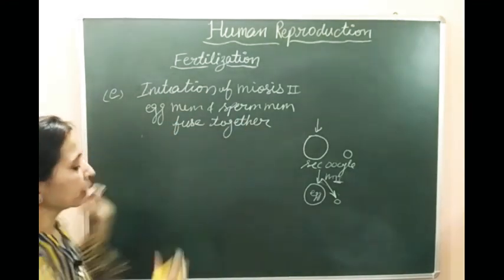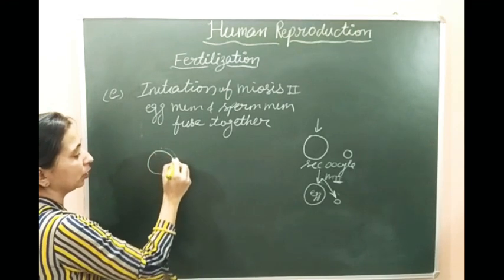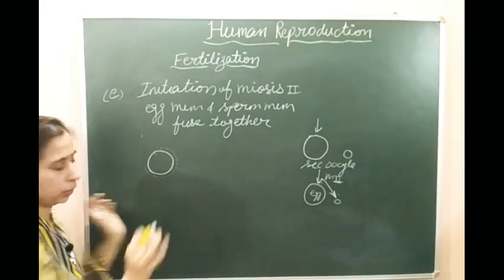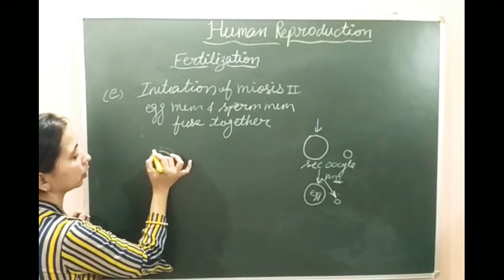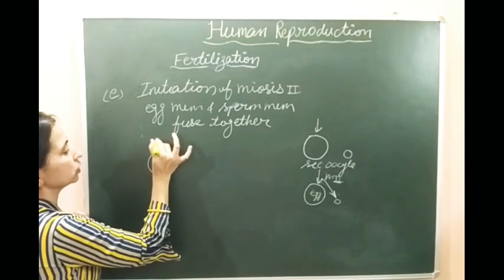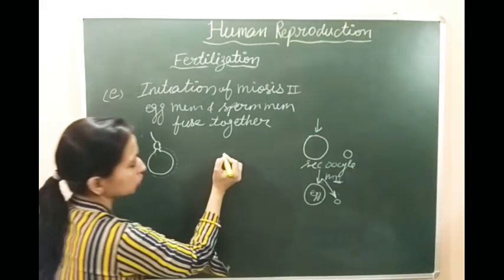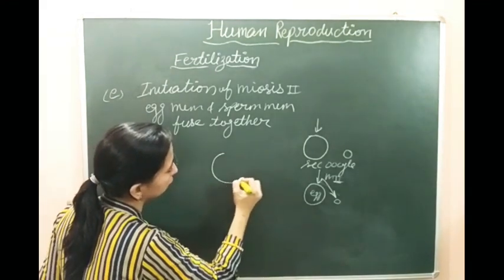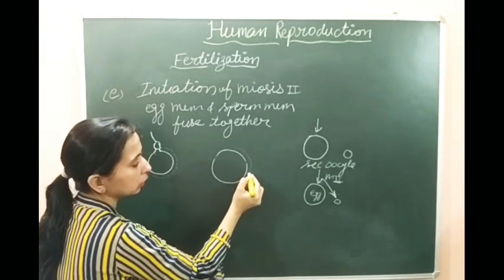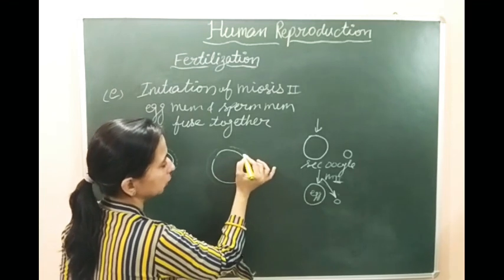Due to the process of meiosis two, the egg membrane and other membranes are not degenerated - the whole membrane is not degenerated. The sperm enters and the fertilization cone is formed, through which the sperm's acrosome connects to the egg. After that meiosis two starts, the membranes remain outside, and the secondary oocyte divides into the egg and the polar body.